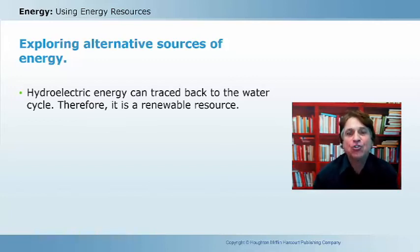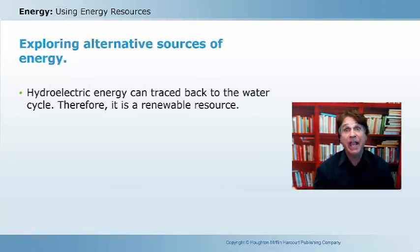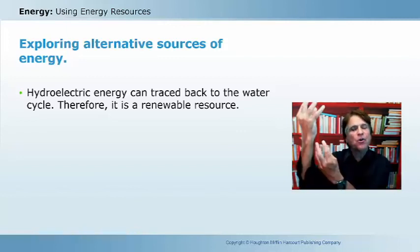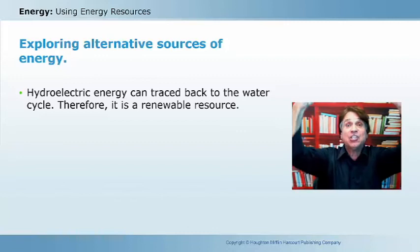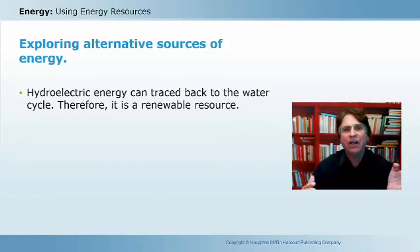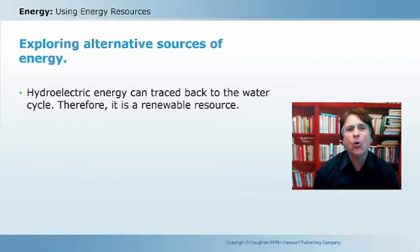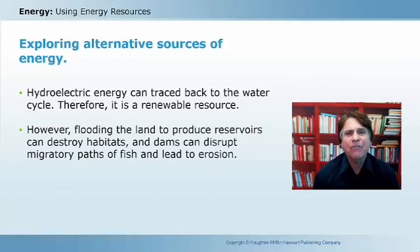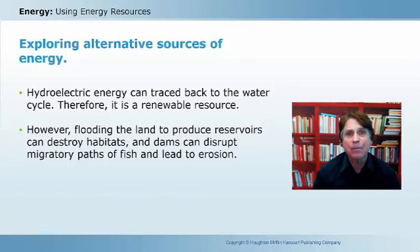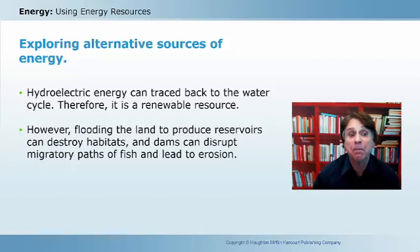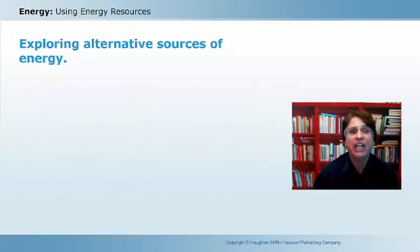Hydroelectric energy can be traced back to the water cycle. Moving water in a river came from rain — evaporation sends water vapor into the sky, it condenses and falls as rain, and the rain runs downhill. When that moving rain impacts the turbines of a hydroelectric plant, we generate electricity. However, the flooding of land to create reservoirs associated with dams can destroy habitats, dams can disrupt the migratory paths of fish, and they can even lead to erosion.